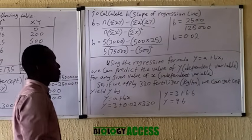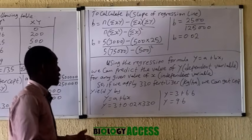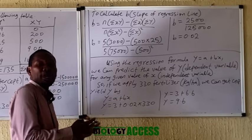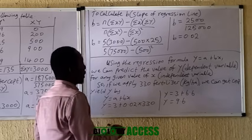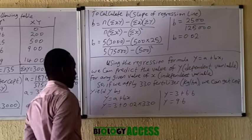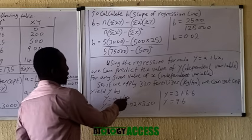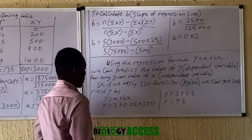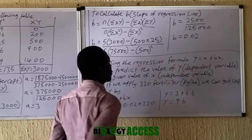Now with A and B determined, you can substitute them into your regression equation Y = a + bX and use it to find any value of Y for a given X. You are asked for the crop yield when 330 kg of fertilizer per hectare is applied. With A = 3 and B = 0.02, substituting X = 330 gives: Y = 3 + (0.02 × 330) = 3 + 6.6 = 9.6. So you can predict a crop yield of 9.6 tons per hectare.